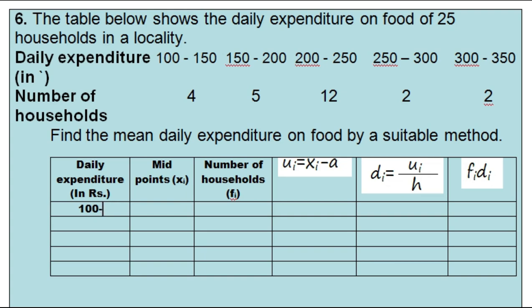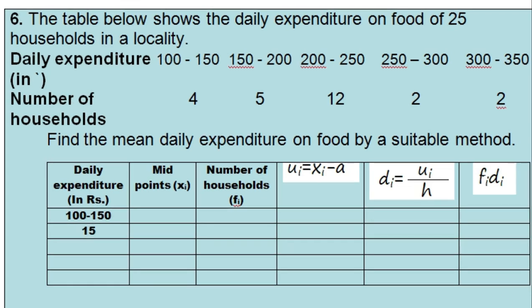When the numbers are very big, then we use the step deviation method. Although the numbers are not very big, still we are going to use the step deviation method just so you know how to use it. Here we take one more step as compared to the assumed mean method.